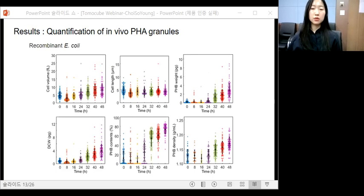Also, for the E. coli cells, the quantification was done like this. From the individual cell data obtained, we performed the correlative analysis to examine the distinctive features of individual cells and PHA granules.